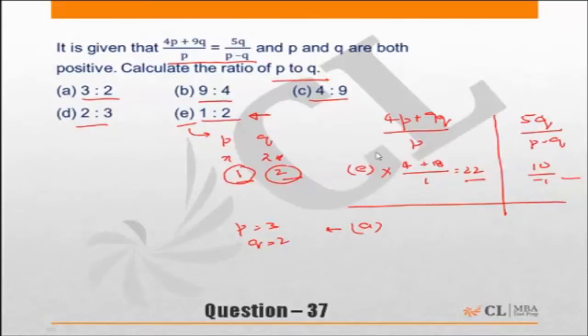If we put p and q as 3 and 2, the left hand side becomes 4 times 3 is 12, plus 9 times 2 is 18, upon p equals 3. 30 by 3 equals 10.